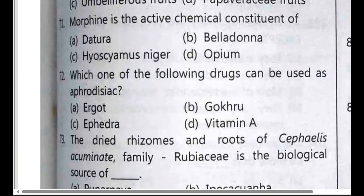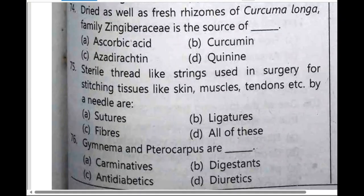Morphine is an active chemical constituent of option B, opium. Dried as well as fresh rhizome of Curcuma longa, the family Zingiberaceae, is a source of option B, curcumin.